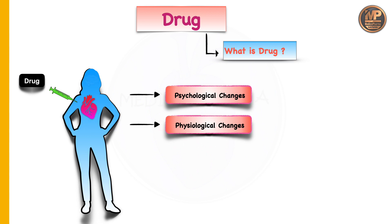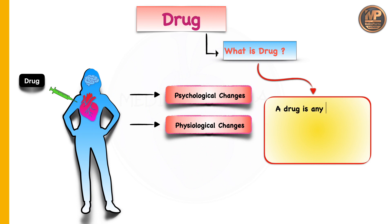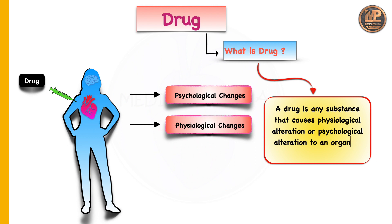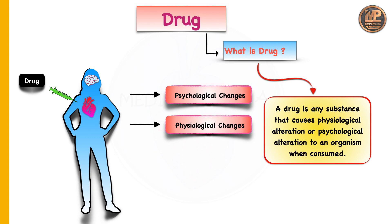Now you can easily define the drug. A drug is any substance that causes physiological alteration or psychological alteration to an organism when consumed by that organism. I request you to understand first and then make your own definition.